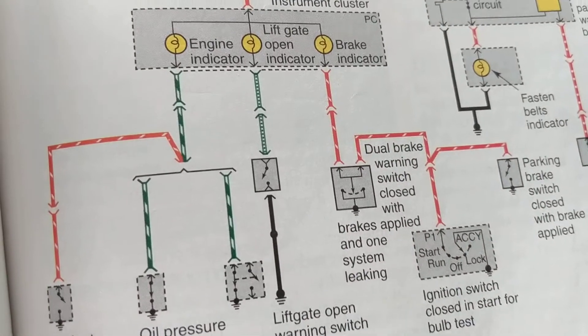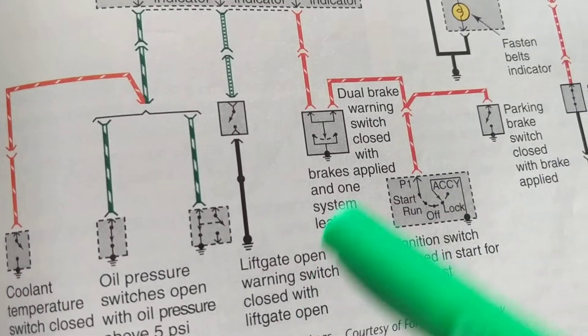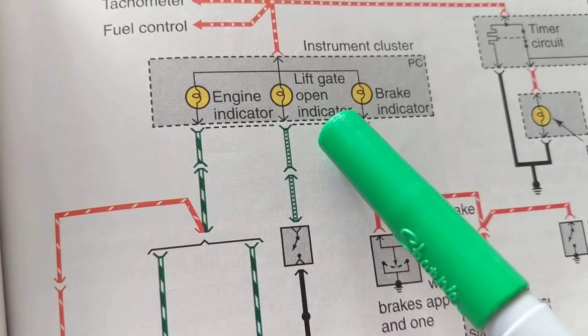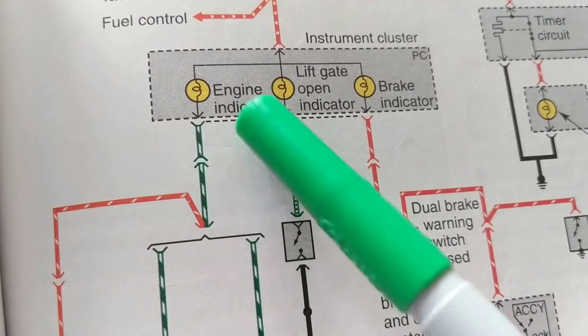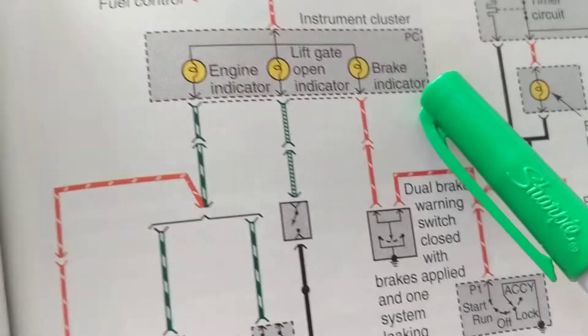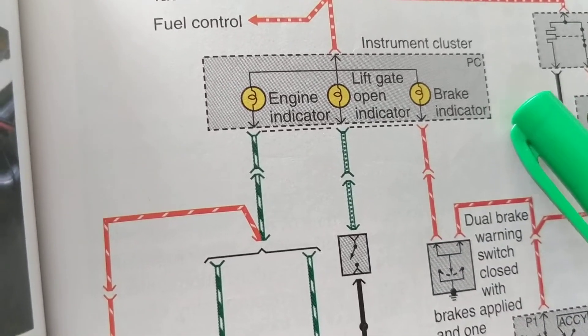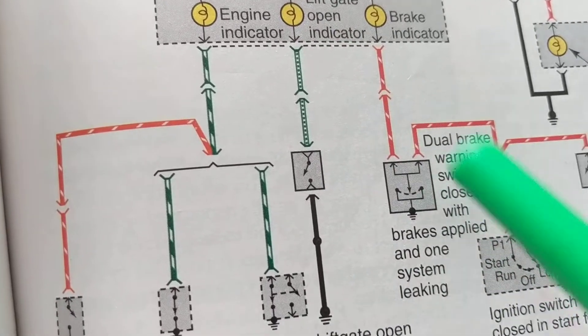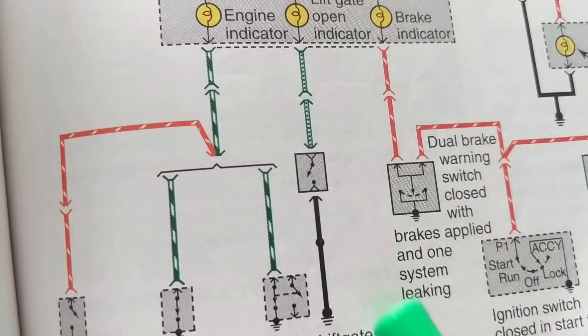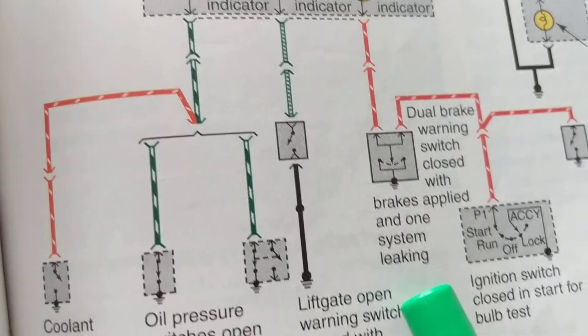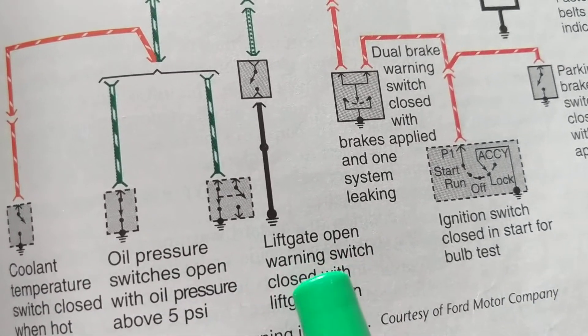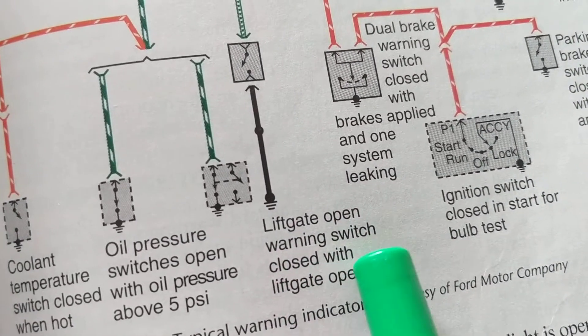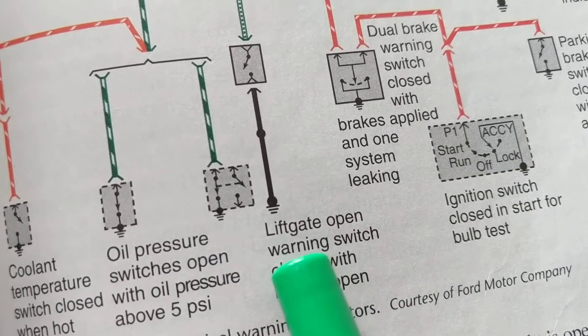The switches dictate what the instrument cluster shows you - cargo gate is open, door is open, brake, parking brake is still on, trunk open. The light stays on. There's a switch that goes to the lift gate open warning. It tells you that the lift gate is open.